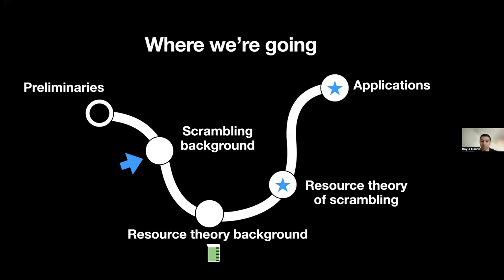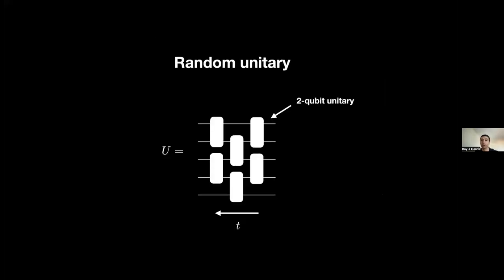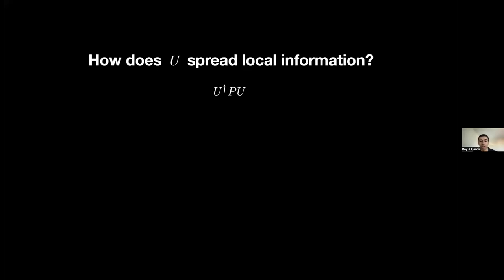Now we're going to use these preliminaries to explain what quantum scrambling is. To motivate it, I'll consider a random unitary with a brick layer structure — each white brick represents a two-qubit random unitary, stacked and layered. We have t layers, and you can think of t as a time parameter, so as time goes on we evolve this unitary with more and more layers. The question we want to consider is how does this unitary spread out local information?